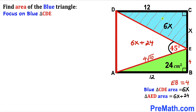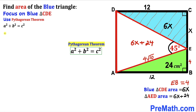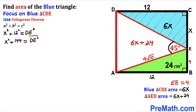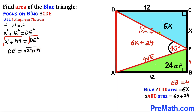Now let's focus on right triangle CDE and apply the Pythagorean theorem to find side DE. Our equation becomes X² + 12² = DE², so DE = √(X² + 144).